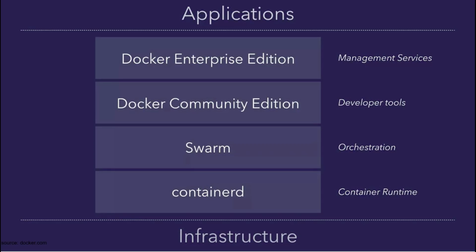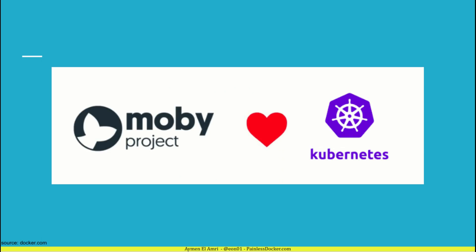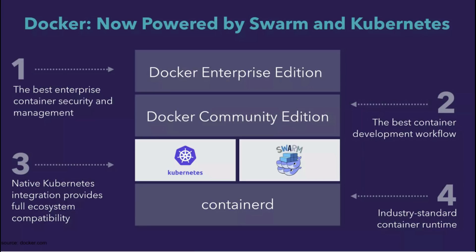One of the most important and recent changes is integrating Kubernetes natively into Docker, which was announced in October 2017. With this integration, Docker customers and developers have the option to use both Kubernetes and Swarm to orchestrate container workloads. The coming versions will allow users to deploy Docker Compose apps as Kubernetes-native pods and services. In the new Docker component schema, Kubernetes is considered a native orchestration tool just like Swarm.